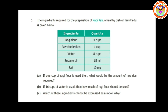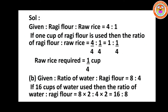Now problem number five. A table gives ingredients for ragi khali, a healthy dish of Tamil Nadu: ragi flour 4 cups, raw rice broken 1 cup, water 8 cups, sesame oil 15 milliliters, salt 10 milligrams. Option A: if one cup of ragi flour is used, what would be the amount of raw rice required? Option B: if 16 cups of water is used, how much ragi flour should be used? Option C: which ingredients cannot be expressed as a ratio and why?